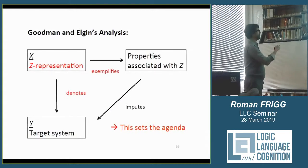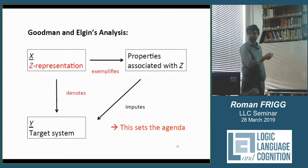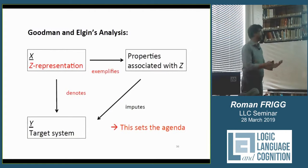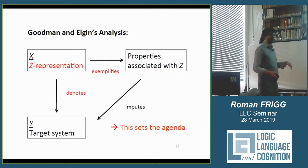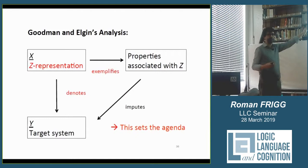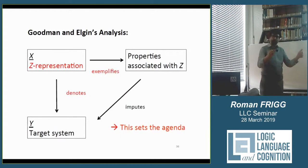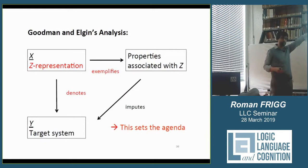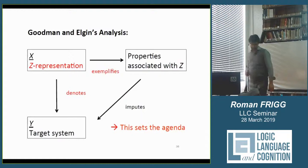We have to come to terms with the notion of a Z representation. We need to say something about denotation and something about exemplification — these are just words so far. I want to spend about ten minutes explaining what Goodman and Elgin mean by these, and then remould these concepts so they fit scientific representation. Goodman and Elgin introduced them in a different context, though recently Catherine Elgin has said these can also be used for scientific representation. The concepts need to be shaped in a slightly different way.